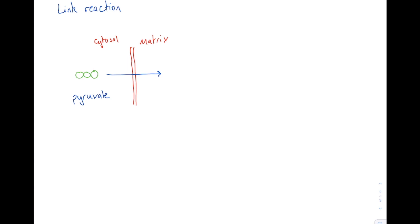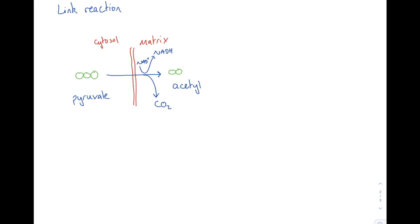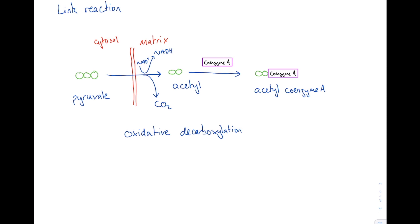Once it has reached the matrix, the pyruvate undergoes decarboxylation — the removal of a carbon group in the form of carbon dioxide, CO₂. This process also reduces NAD+ into NADH. As we've lost a carbon we now have a two-carbon compound which we call acetyl. This acetyl group is then combined with a coenzyme called coenzyme A, forming acetyl coenzyme A. This process is known as oxidative decarboxylation — oxidative because the removal of hydrogen reduces NAD+ to NADH, and decarboxylation because you're removing your carboxy group, or carbon dioxide.